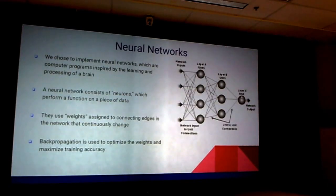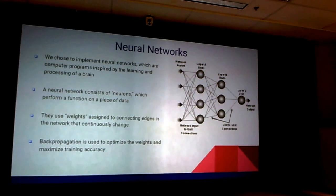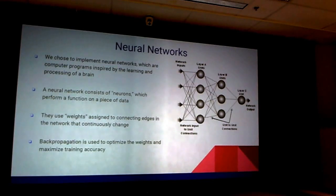We implemented a neural network to process this data. A neural network is basically a computer simulation inspired by how a brain processes information. Similar to how a brain functions, it takes external data, processes it, recognizes patterns and variations, and when future input is processed through the network, it is able to make predictions based on those patterns.